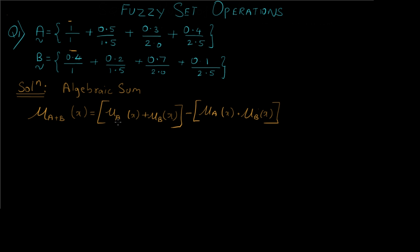In the first case we have 1 and 0.4. We take their addition which is 1.4, and then subtract the multiplication of these two values: 1 × 0.4 = 0.4. So the final answer is 1.4 − 0.4 = 1. This gives us the first value.